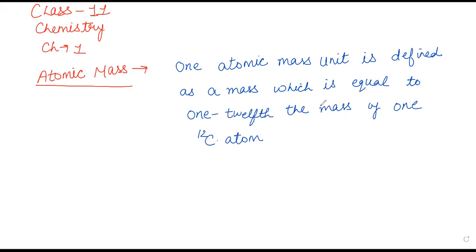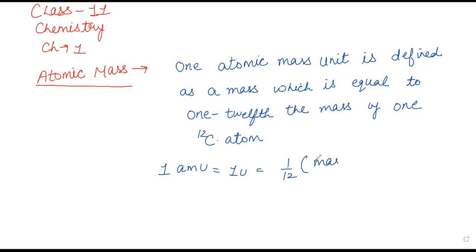1 AMU जिसको हम लोग 1 U भी लिखते हैं, क्योंकि आज इसको unified mass के तौर पे accept कर लिया गया है। So, 1/12th mass of one atom of carbon-12 — इस mass को we call 1 AMU.